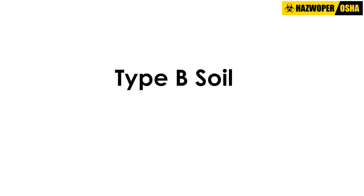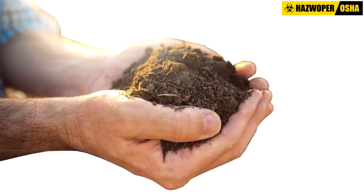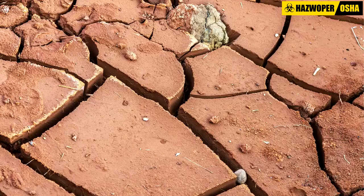Type B soil is cohesive and has often been cracked or disturbed, with pieces that don't stick together as well as type A soil. Type B soil has a medium unconfined compressive strength of between 0.5 and 1.5 tons per square foot. Examples of type B soil include angular gravel, silt, silt loam, and sand.